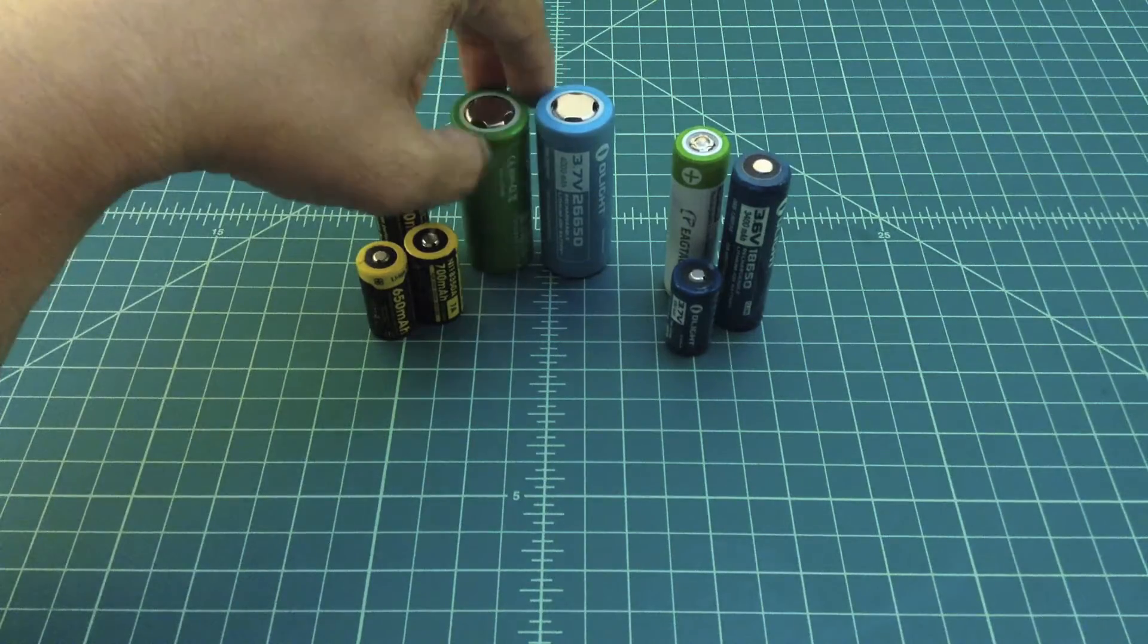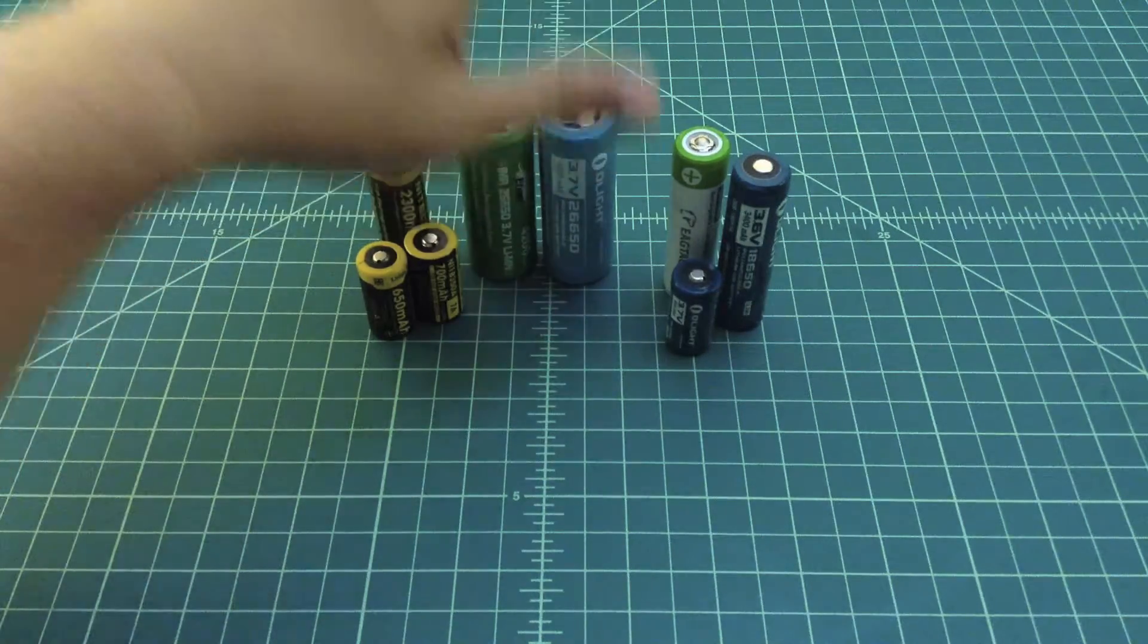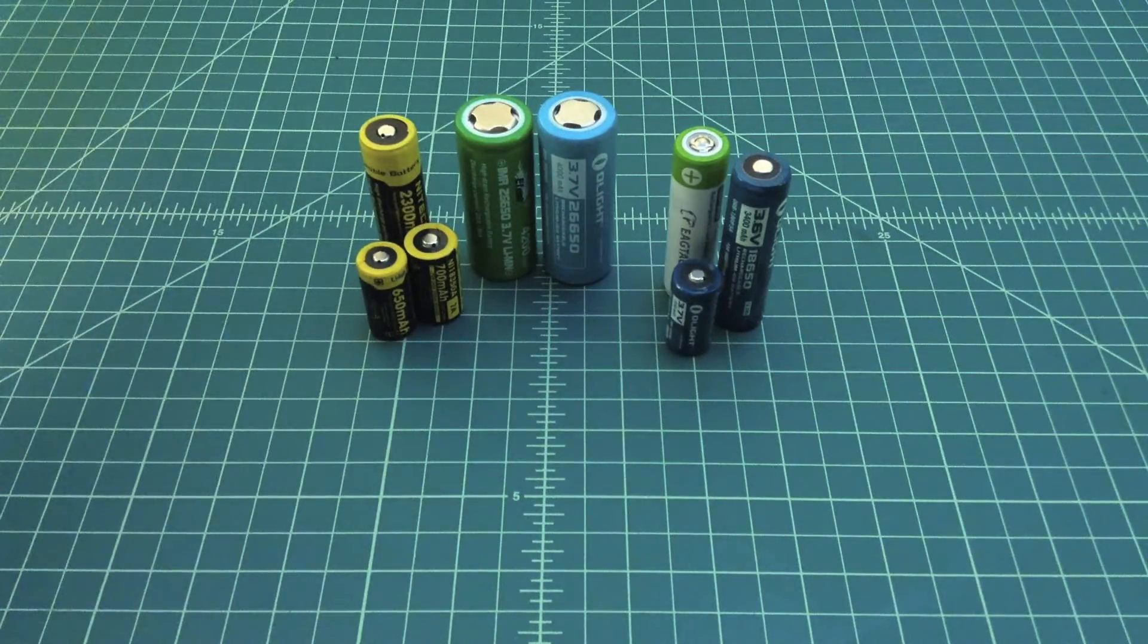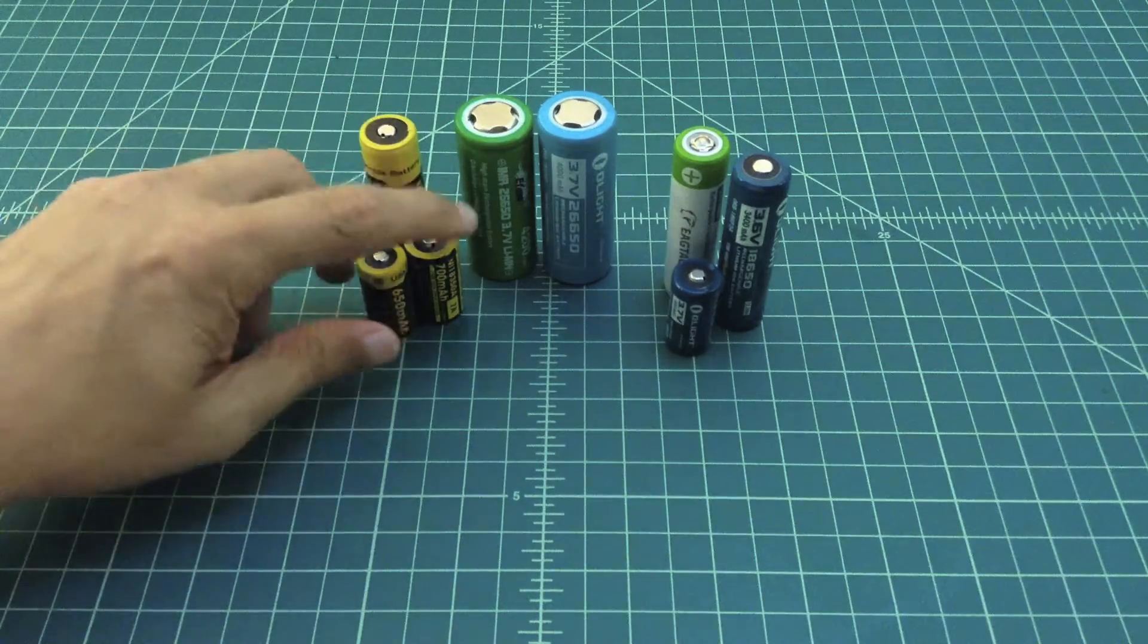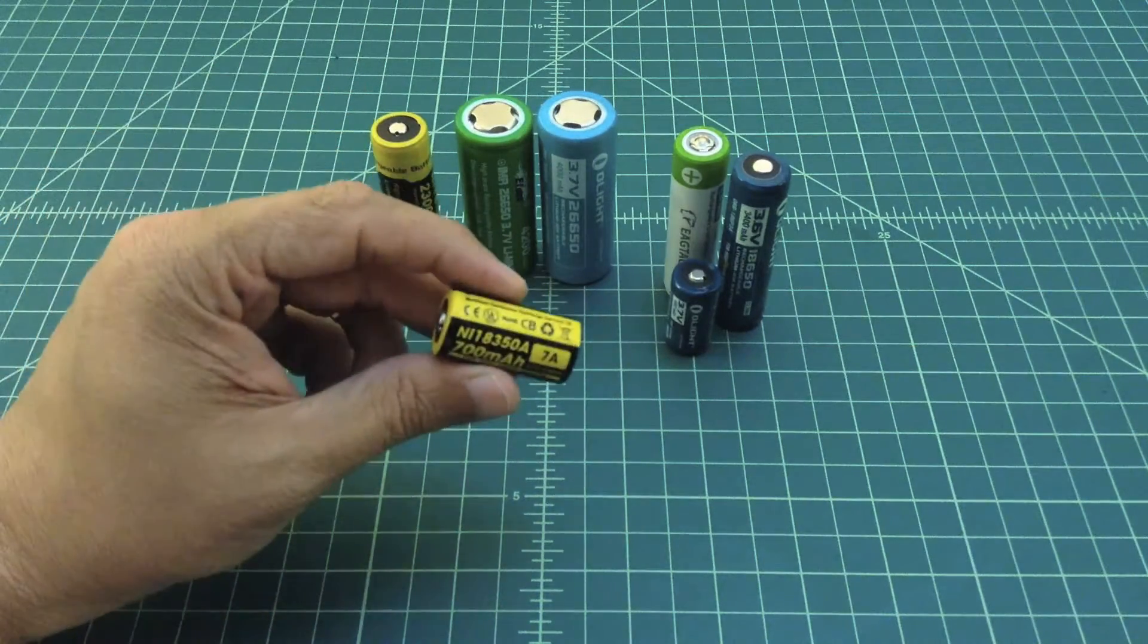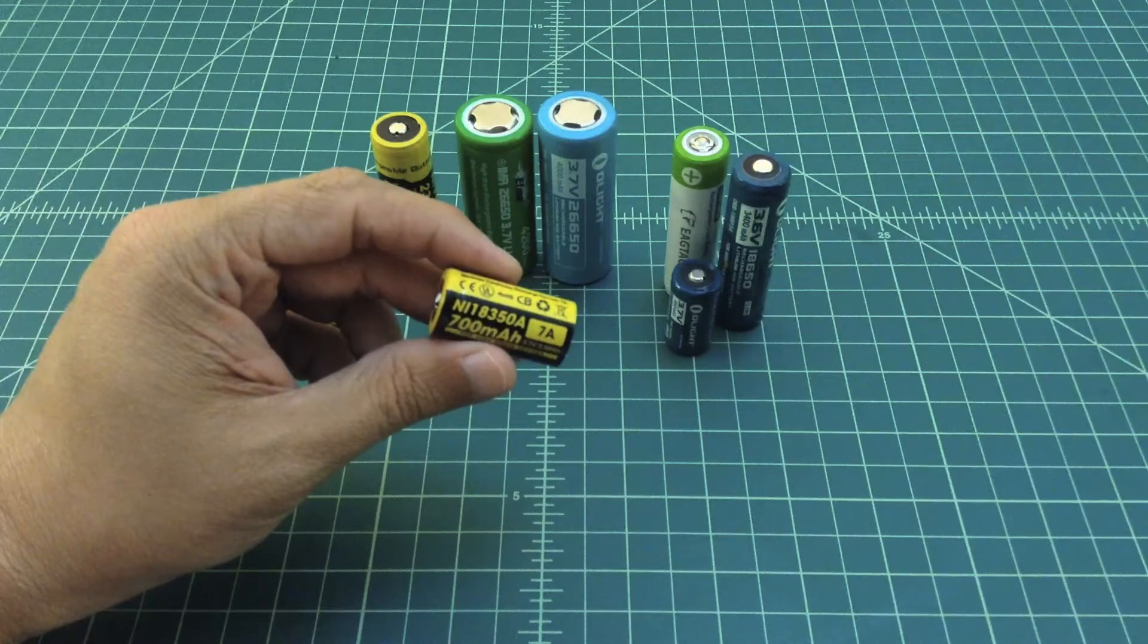But the chemistry of the batteries really impact how much amperage the battery is rated with. So here's an IMR battery and it's rated at 7 amps.